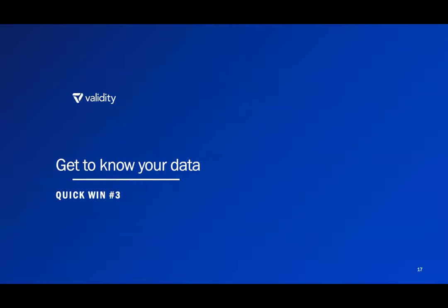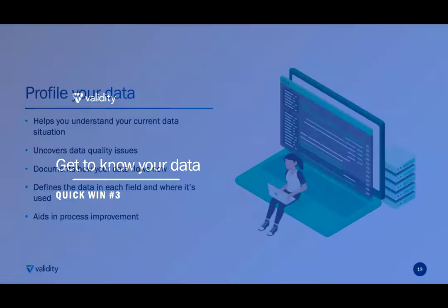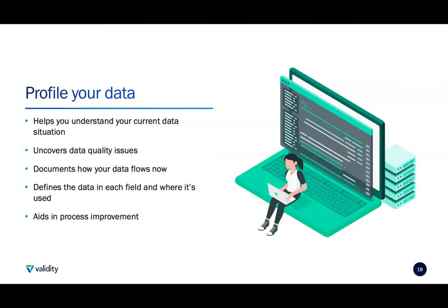How do you get rid of stuff if you don't know what's going on with your data? You have to get to know your data — you can't manage it if you don't know anything about it. We do this through profiling. Profiling is not defining the ultimate state you want your data to get to — that comes later. This is where it helps you understand your current data situation. You're going to uncover your data quality issues: where you might have duplicates, unstandardized data, missing information, missing decision support. You document how your data flows, understanding which data elements are used and how they impact other programs, whether it's a marketing program or other systems that feed data into or out of the CRM. This aids in process improvement and is actually your first step to ending project-based data management.